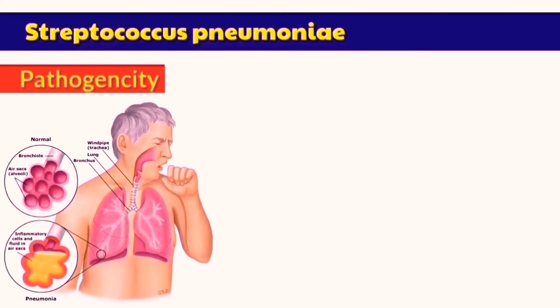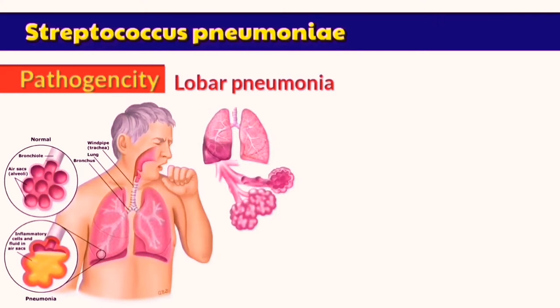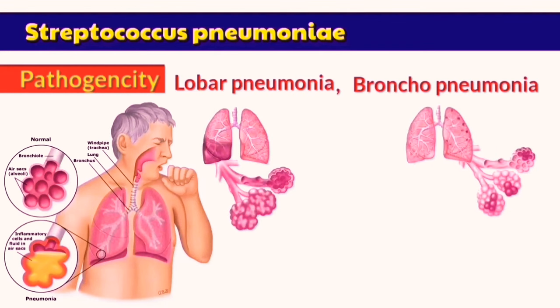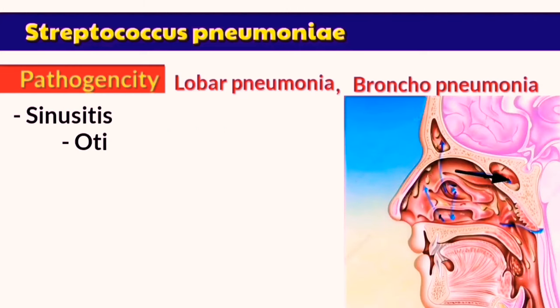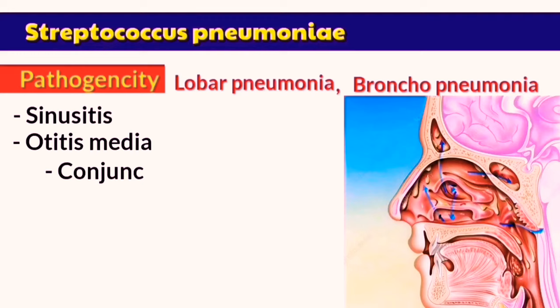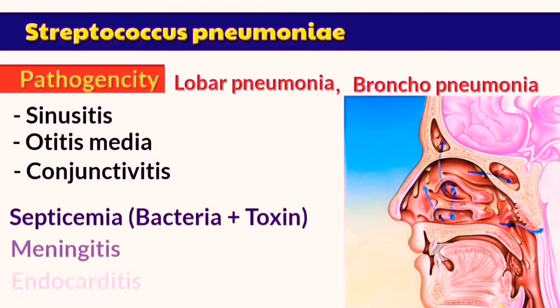The Strept pneumoniae causes several infections, most of which are in the respiratory tract, such as lobar pneumonia, bronchopneumonia, sinusitis which can spread to the middle ear and cause otitis media, and conjunctivitis. If this bacteria enters the blood and releases its toxins, it will cause septicemia, which in turn will lead to meningitis and endocarditis.